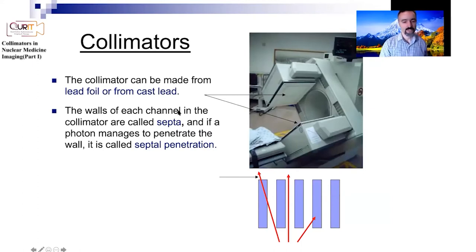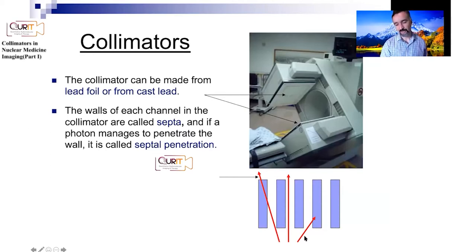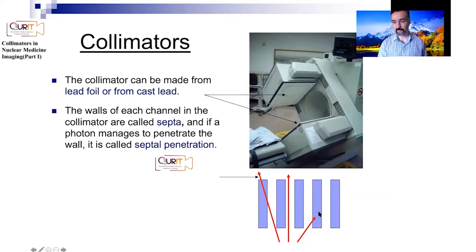These collimators are typically made from lead foils or from cast lead. The walls between the holes are called septa, and the whole collection is called a collimator. If photons manage to penetrate through the septa, we call that septal penetration, which is not supposed to happen commonly. The design should ensure that more than 95% of the time you are stopping photons from septal penetration.